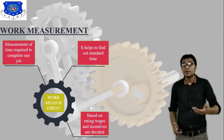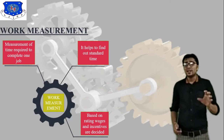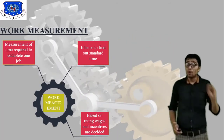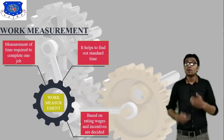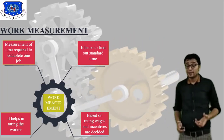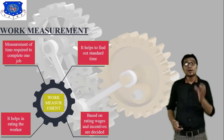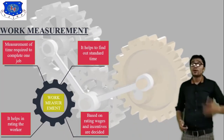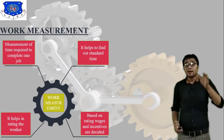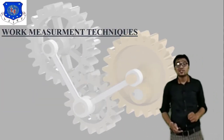Based on work measurement, rating, wages, and incentives are defined for workers. It determines final timing and standard time, and can calculate wages and incentives for labor. It also helps in merit rating of workers. Work measurement defines completion time, from which you calculate standard time and determine wages and incentives.